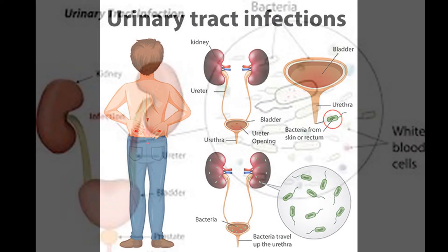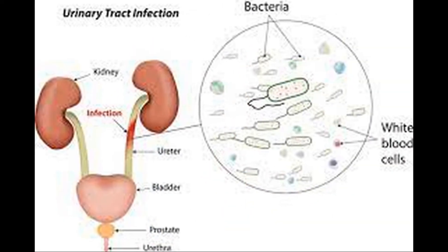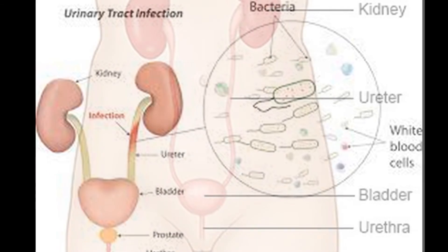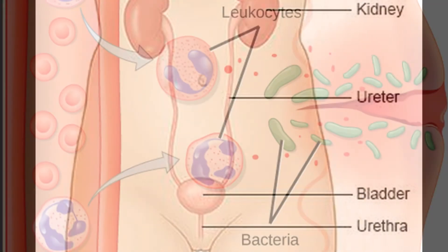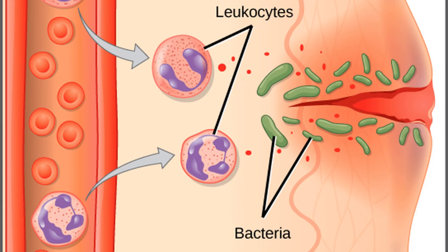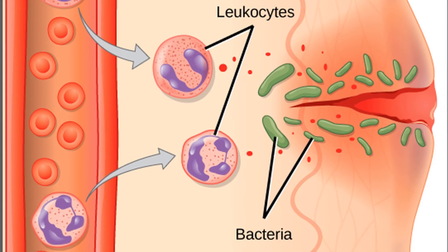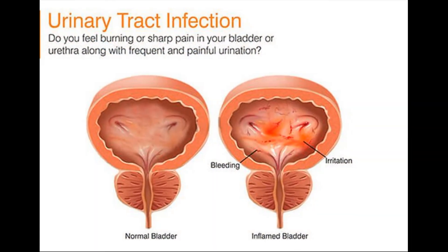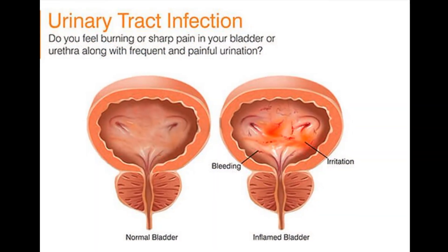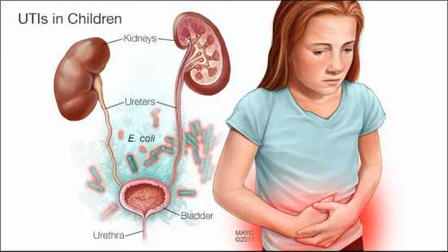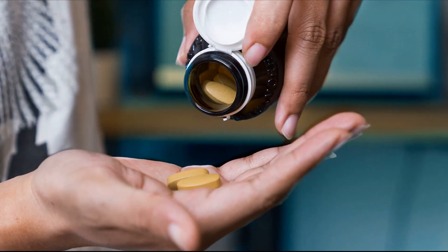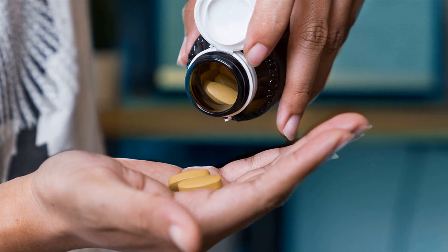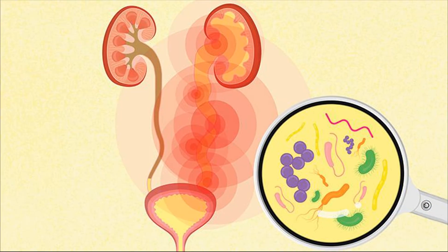Urinary Tract Infection (UTI): It is an infection of any part of the urinary system — the kidneys, urethra, urinary bladder or ureters. It occurs when bacteria gain entry into the urinary tract and overcome the body's defenses. Common symptoms include a strong and frequent urge to urinate and a painful burning sensation while urinating. It is treated with antibiotics and can be cured within 2–3 days of treatment in case of mild infections.